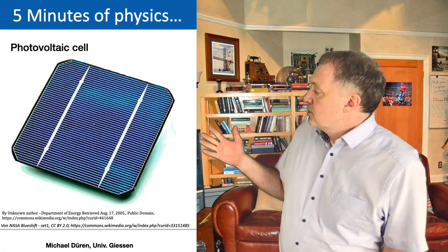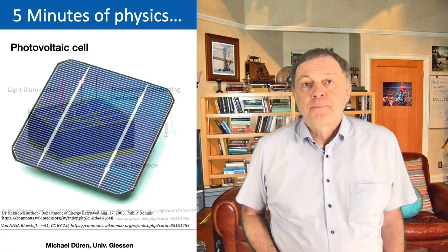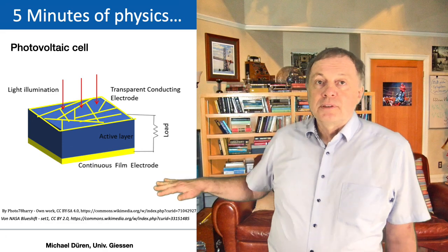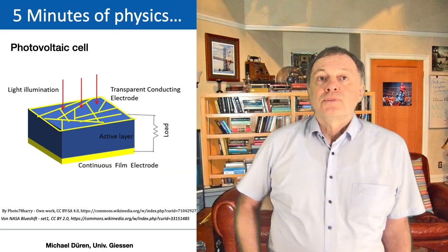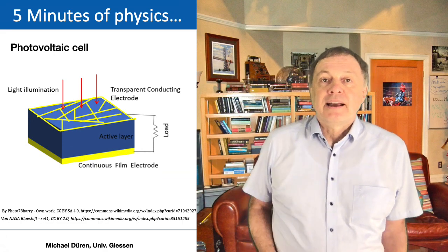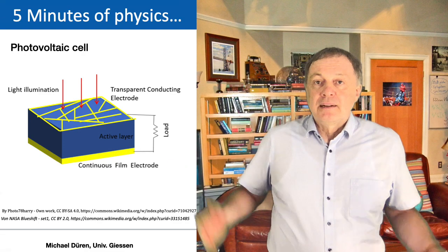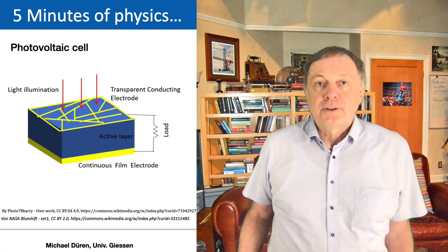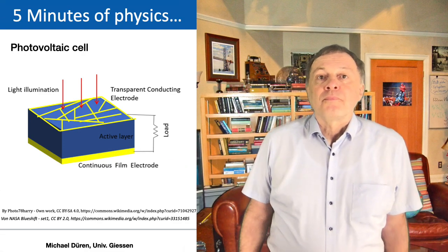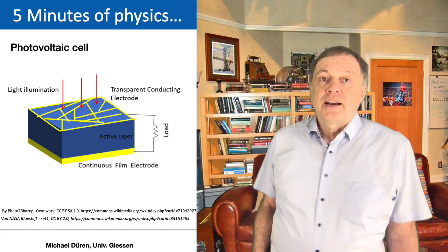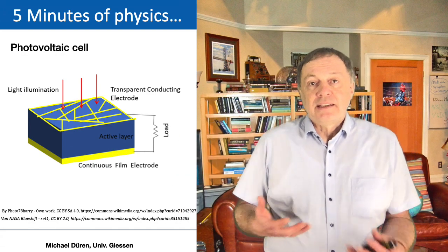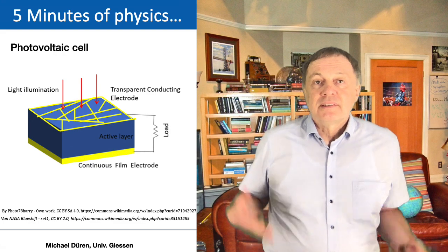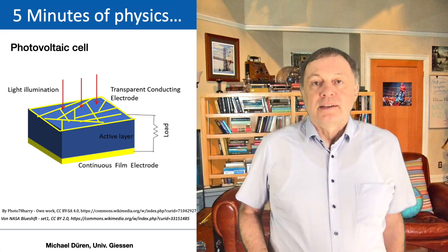How does a photovoltaic cell look like? Basically at the top and the bottom of this photovoltaic cell you have electrodes, which means there's some metal or something where the electrical current can flow through. To this photovoltaic cell, where the electricity is coming out, you just connect a load. This is what the user has to do.